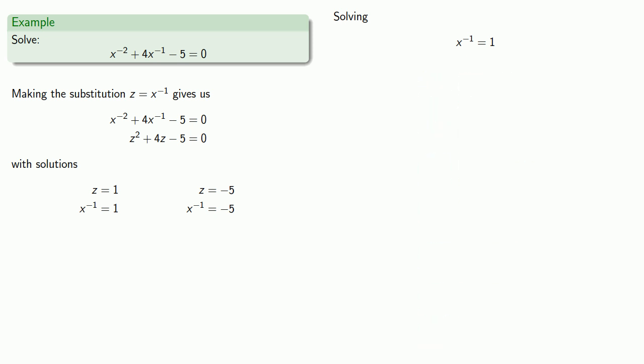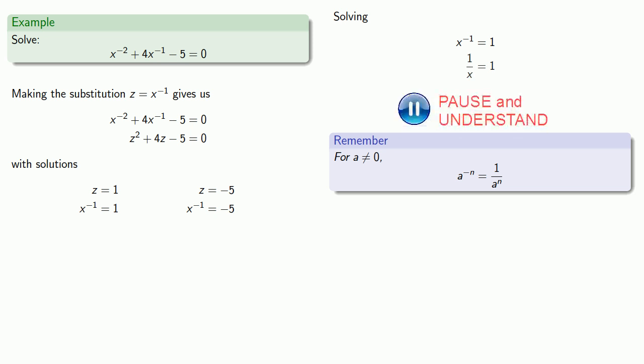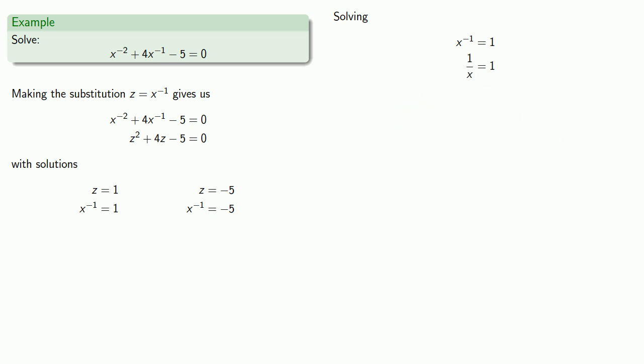So remember, a negative exponent corresponds to 1 over. So x to the power minus 1 is really 1 over x. Now, our equation is a quotient, 1 divided by x. So our first step is going to be to multiply. So we'll multiply both sides by x. And if we simplify, we get our first solution, x equals 1.